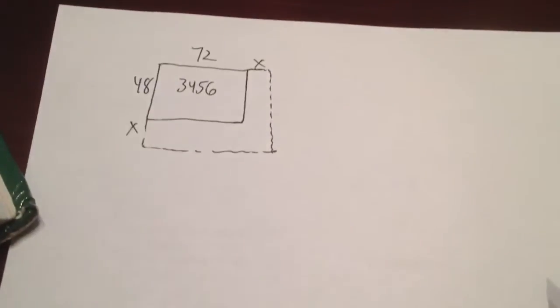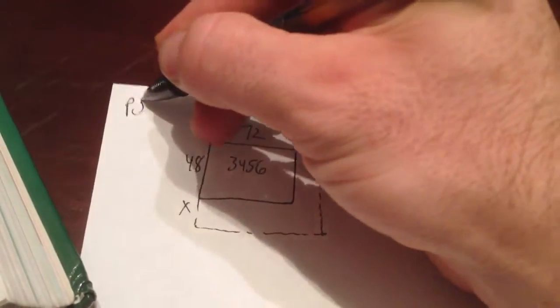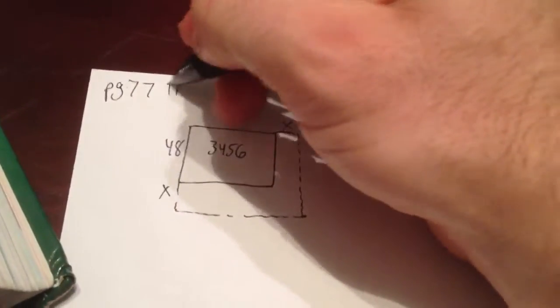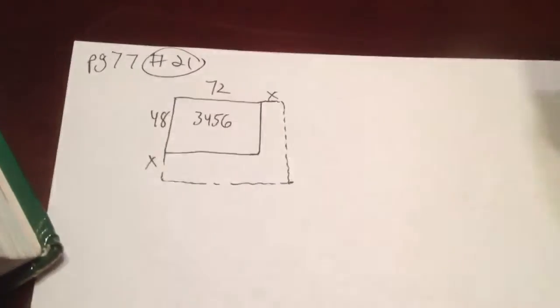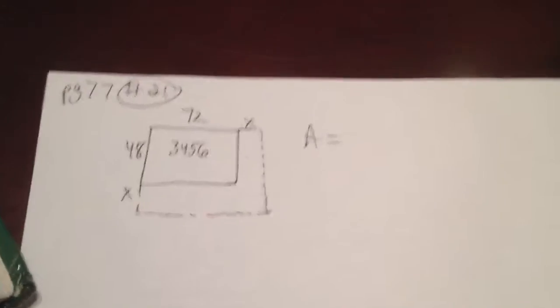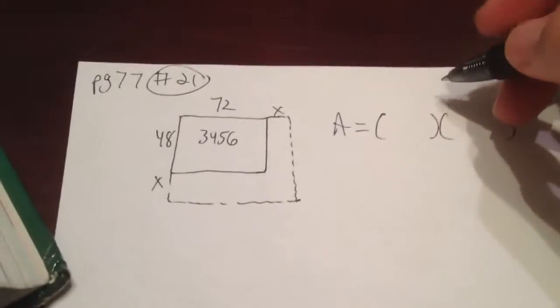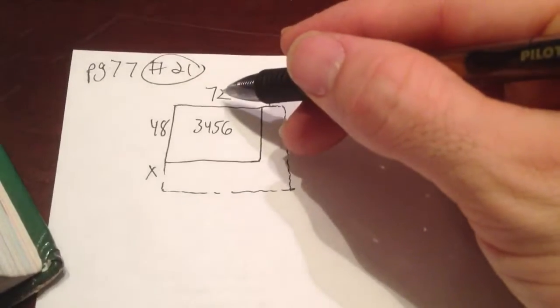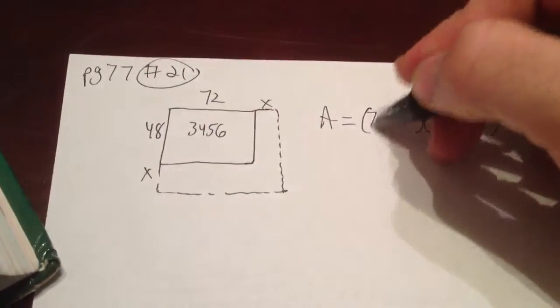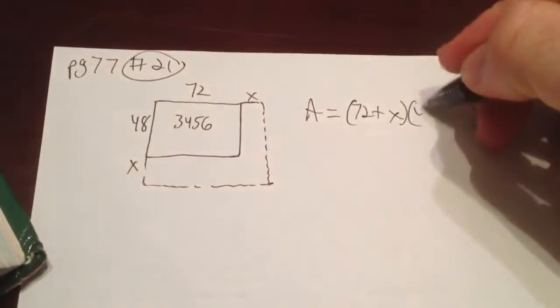So if you're trying to figure out that distance there, on those two spots there, then you have to use an area formula. Area formula is length times width. Well, what is the length times the width? Well, the length is 72 plus this x. The width is 48 plus the x.